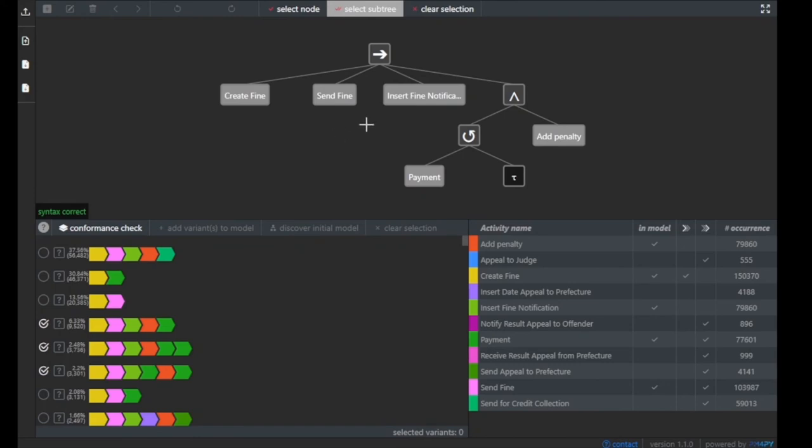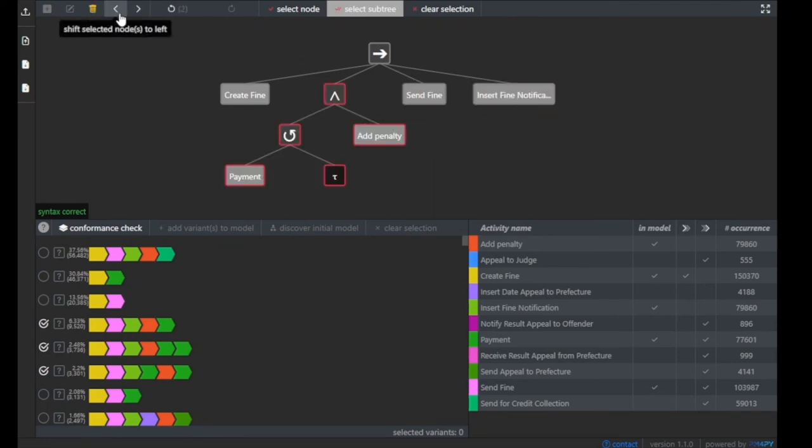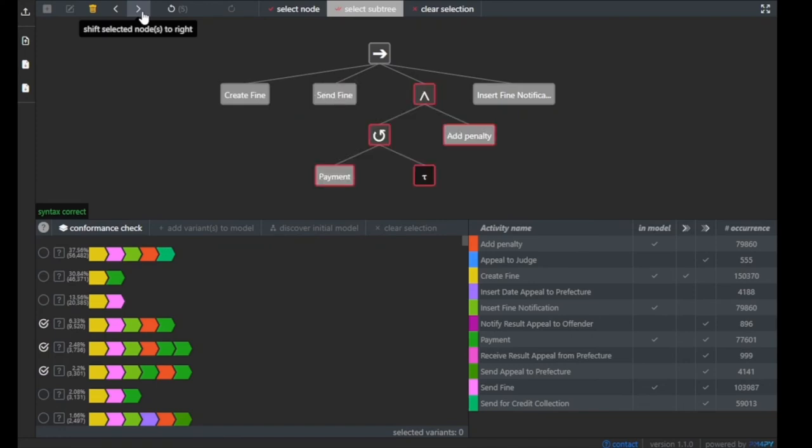Then we have a parallel block of a loop on payment and add penalty. Cortado offers a process model editor.